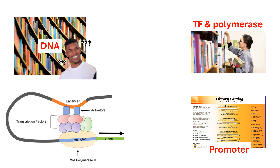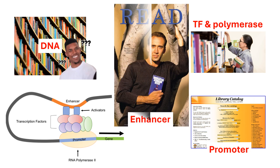Enhancer regions are like motivational posters in the library that say, read more books. These can be far from the actual book or gene they control. When transcription factors and other proteins bind to these enhancer regions, they boost the reading activity, making sure more copies of that gene are made. In summary, promoter regions kickstart the reading process of a gene, while enhancer regions boost the reading process, making sure the gene is read more often and more efficiently. That's how our cells know when and how much of a gene to read.